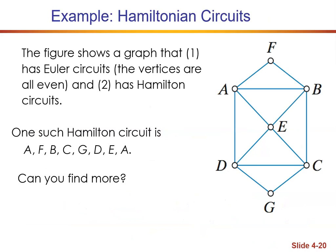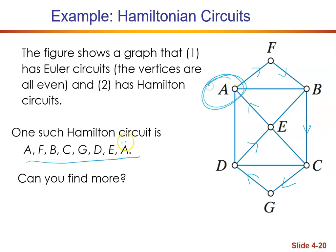Let's take a look at a Hamilton circuit. Here we have a graph. One, it has Euler circuits since all the vertices are even. Two, it also has Hamilton circuits. One circuit is: start at A, go to F, then B, then C, then G, then D, then E, then back to A. We started and stopped at A. Notice we did not hit every edge — that is the difference from an Euler circuit, where we would have to hit every edge.